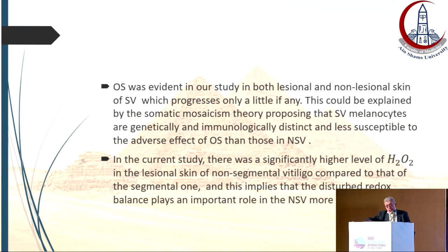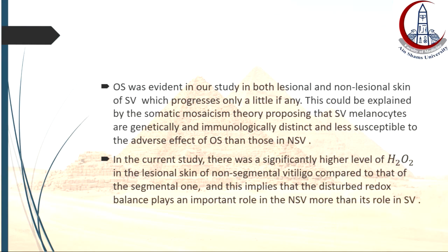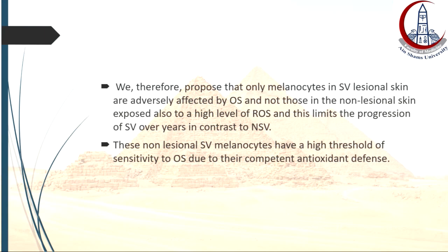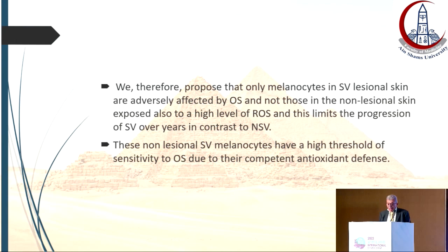Oxidative stress was thus evident in both lesional and non-lesional skin of segmental vitiligo, which progresses only a little, if any. This could be explained by the somatic mosaicism theory, proposing that segmental vitiligo melanocytes are genetically and immunologically distinct and less susceptible to the adverse effects of oxidative stress than those in non-segmental vitiligo. There was also a significantly higher H2O2 level in lesional skin of non-segmental compared to segmental, implying that disturbed redox balance plays a greater role in non-segmental vitiligo. We propose that only melanocytes in segmental vitiligo lesional skin are adversely affected by oxidative stress, and not those in non-lesional skin — limiting the progression of segmental vitiligo over the years in contrast to non-segmental vitiligo. These non-lesional segmental vitiligo melanocytes have a higher threshold of sensitivity and are more resistant to oxidative stress due to their competent antioxidant defense.